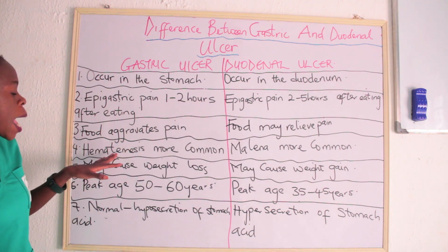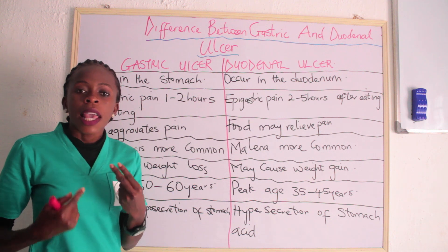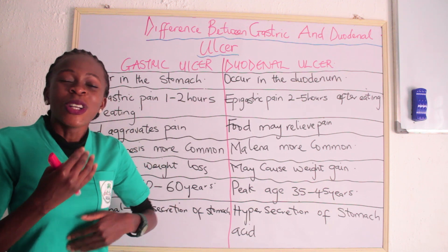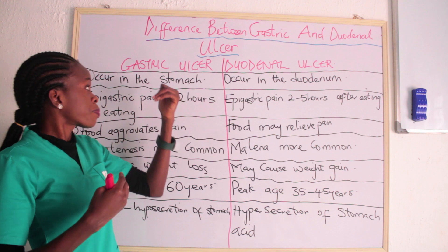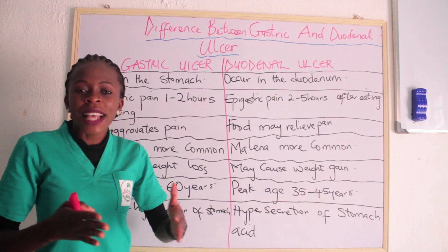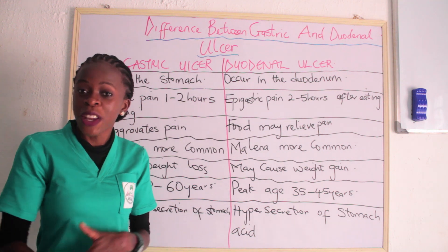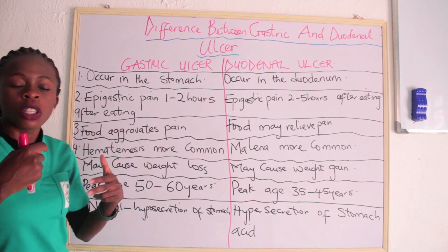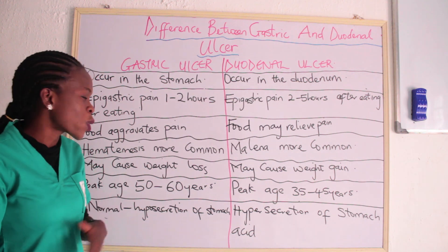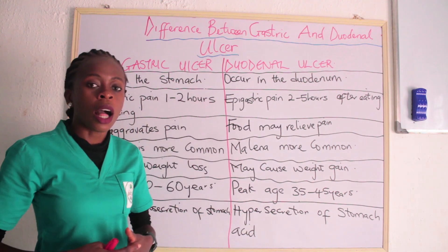The next difference is hematemesis versus melena. In gastric ulcer, hematemesis — which means vomiting blood — is more common, because the stomach is closer to the mouth. In duodenal ulcer, melena is more common. Melena is passing fecal matter alongside blood, because the duodenum is closer to the anus. So hematemesis is more common in gastric ulcer, while melena is more common in duodenal ulcer.